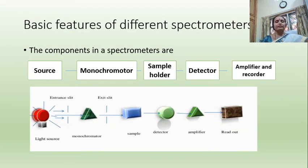The basic features of different spectrometers are: first, we have a source — a light source. Then we have a monochromator, which ensures that only one wavelength passes through the sample. All polychromatic light with different wavelengths is made into only one color by passing it through a monochromator.